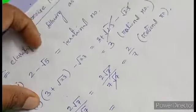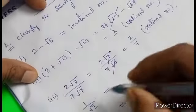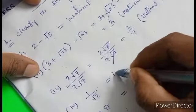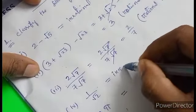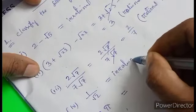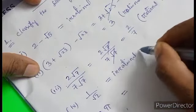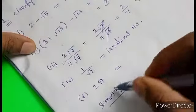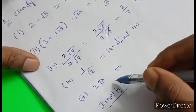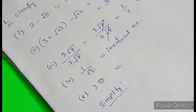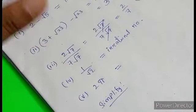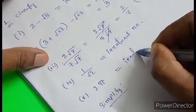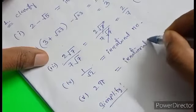Question: 1 by root 2. Since root 2 is present, this is an irrational number. Next: 2π. Pi is approximately 22 by 7 or 3.1414... and so on — this is an irrational number.